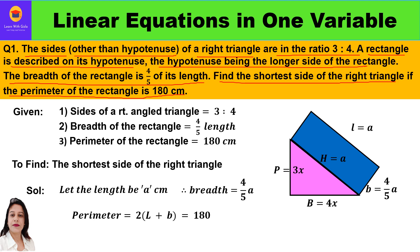Suppose I take a right angle triangle — this is my 90 degree, and the side opposite to 90 degree is the hypotenuse, which is the longest side. The sides other than the hypotenuse — that means the perpendicular and the base — are in the ratio of 3 to 4. So I have assumed: let my perpendicular side be 3x and my base be 4x. Further, they are saying a rectangle is described on its hypotenuse — so on this hypotenuse H, I will put a rectangle on it.